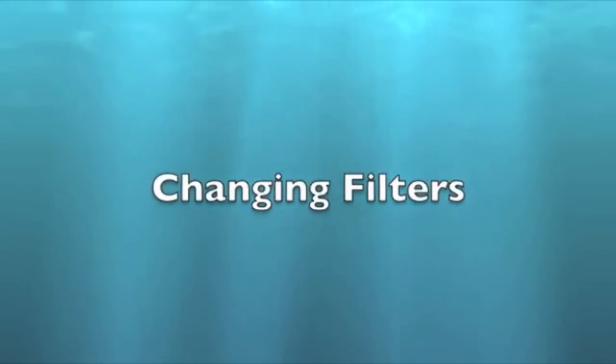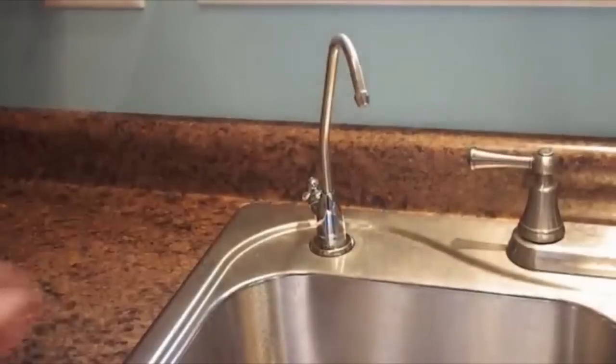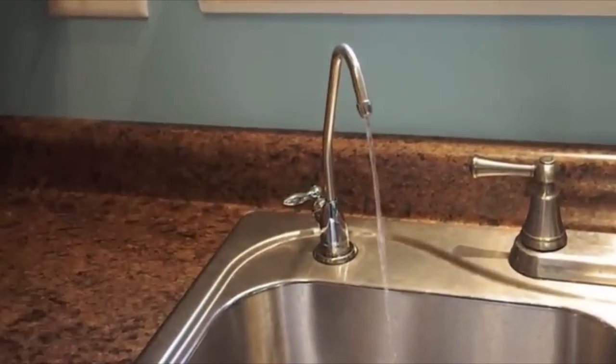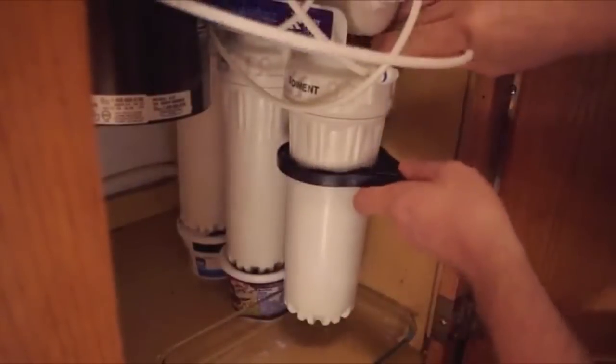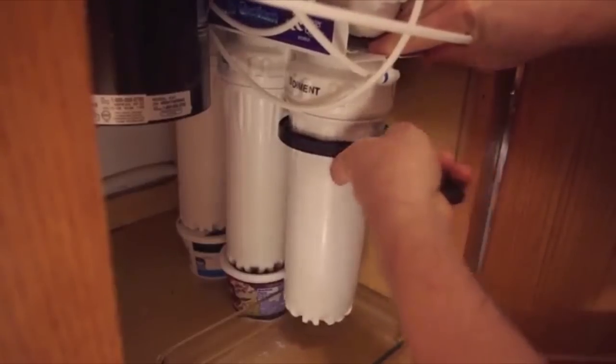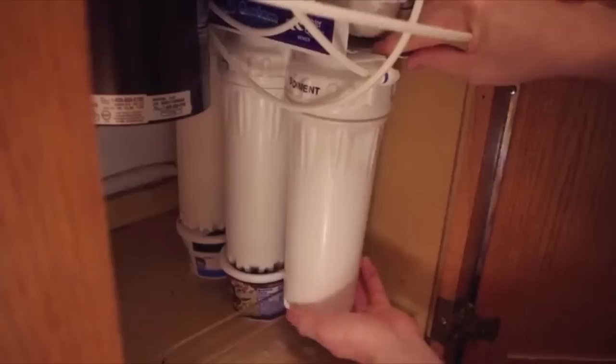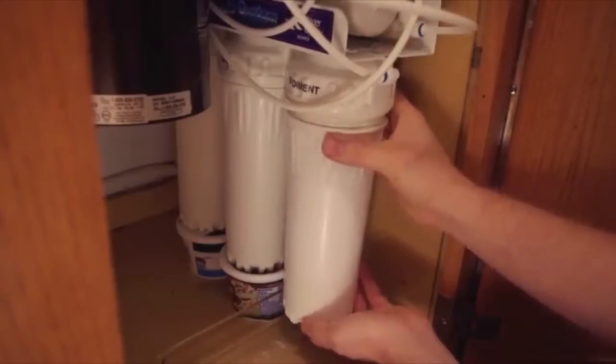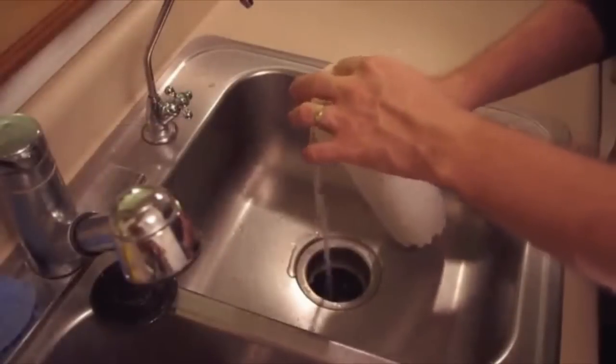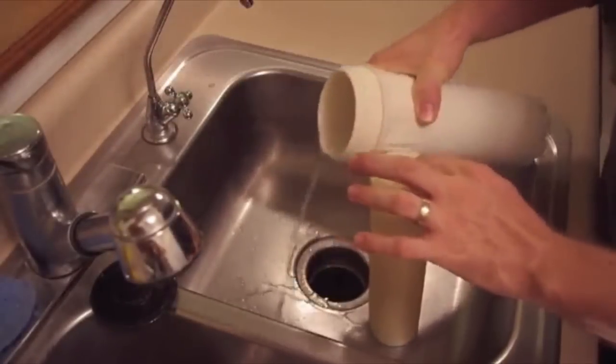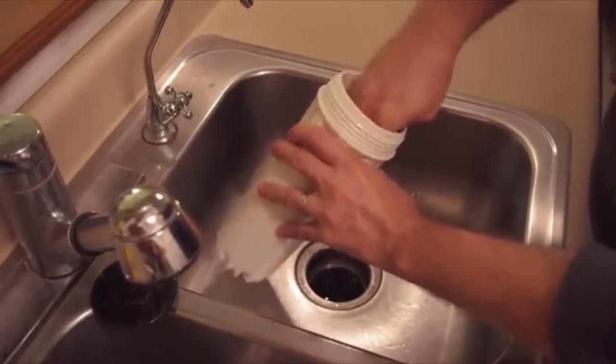Changing filters. Turn off the cold water supply valve. Turn on the faucet and drain the tank and turn off the tank valve. Using the supplied wrench, loosen and remove the filter housing. Be prepared for some water spillage. Remove the old filter cartridge and discard.